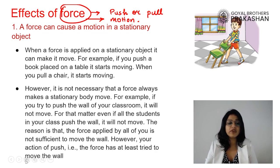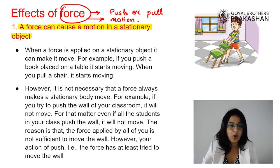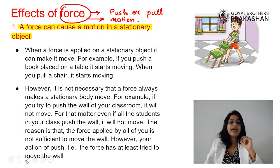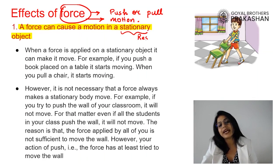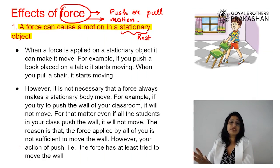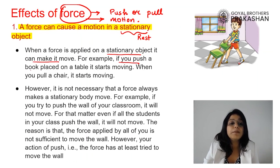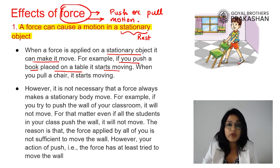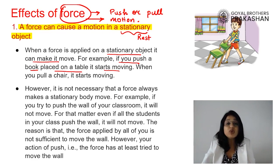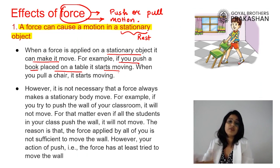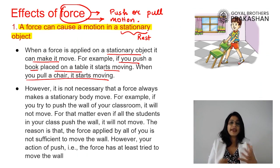Let us begin by understanding what all force can do. Number one, a force can cause motion in a stationary object. When a force is applied on a stationary object it can make it move. For example, if you push a book placed on the table it will start moving. Or if you pull a chair in the classroom, the chair will start moving. Anything at rest can be put into motion by application of force.